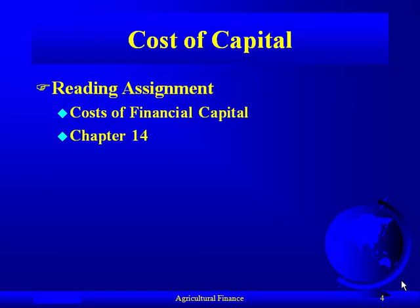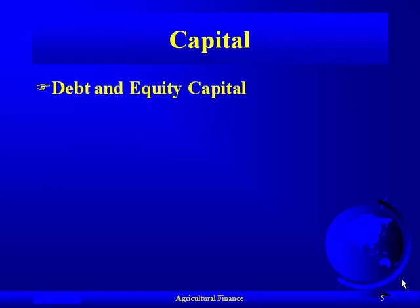Your reading assignment now is chapter 14. Looking at capital, you have debt and equity capital. If you remember in your accounting on the balance sheet, you have your assets that you control, but you have to finance those assets with your debt plus your equity.